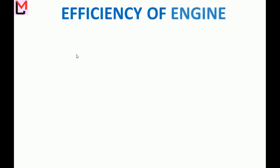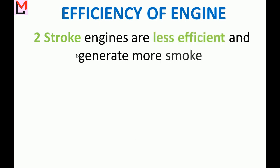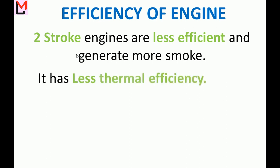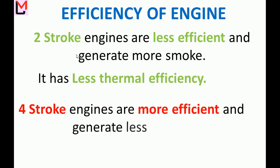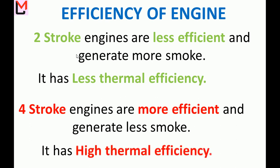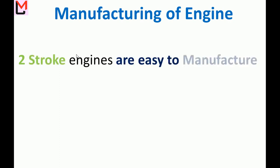Efficiency of engine: Two-stroke engines are less efficient, generate more smoke, and have less thermal efficiency. Four-stroke engines are more efficient, generate less smoke, and have high thermal efficiency. Manufacturing: Two-stroke engines are easy to manufacture.